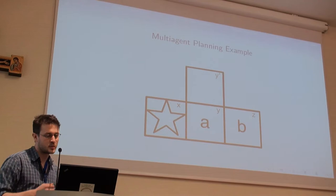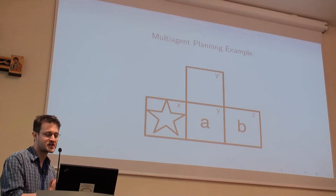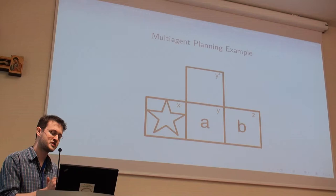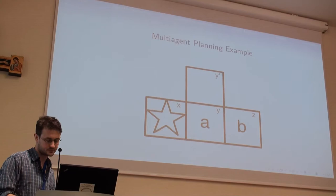You'll move A to the goal on the left, it will report there, and then you'll move it out of the way so that B can get there. Although this problem is very small, it's interesting because all of A's move actions change what B can do. So there's a strong interaction between the agents in the problem.